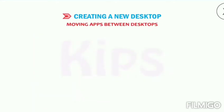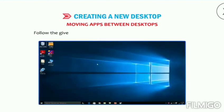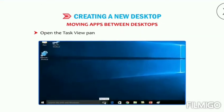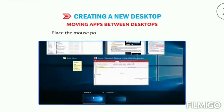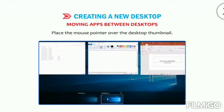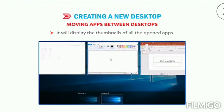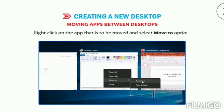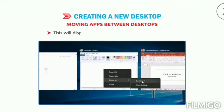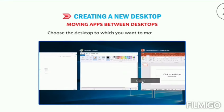Now we will talk about moving apps between desktops. Follow the given steps to move an app from one desktop to another: open the Task View pane by clicking on the Task View button, place the mouse pointer over the desktop thumbnail — it will display the thumbnails of all opened apps. Right-click on the app that is to be moved and select the Move To option. This will display the desktop list that you have created. Choose the desktop to which you want to move the app.